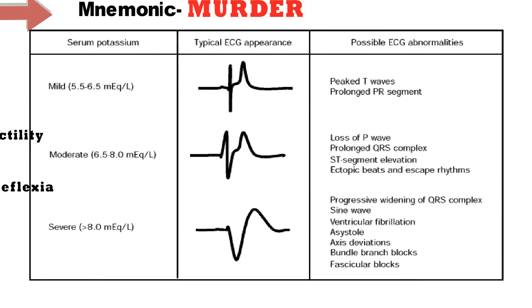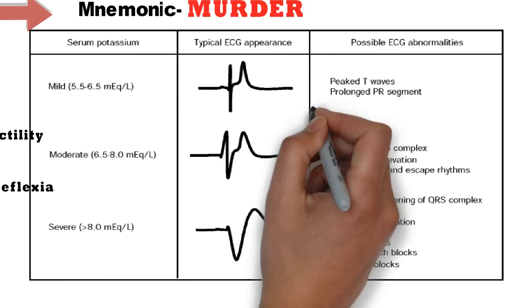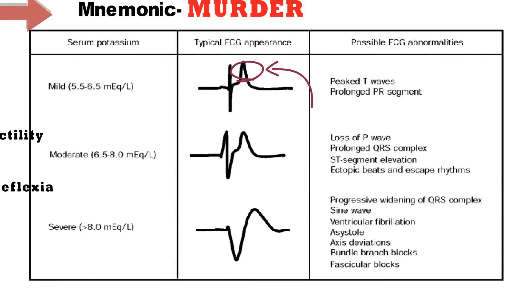Let's see the ECG changes in hyperkalemia. When the serum potassium level is around 5.5 to 6.5 mEq per litre — mild hyperkalemia — there can be peaked T waves and prolonged PR segment, as you can see in the ECG appearance. When the level is around 6.5 to 8 mEq per litre — moderate hyperkalemia — there can be loss of P wave, prolonged QRS complex, ST segment elevation, ectopic beats and escape rhythms.